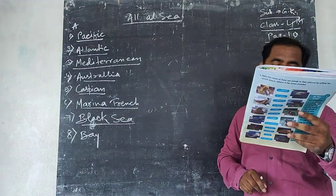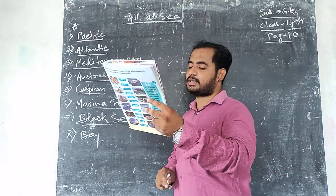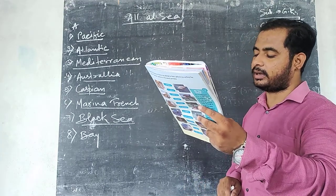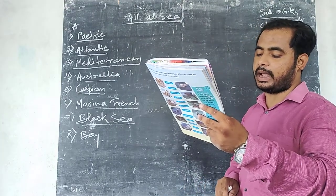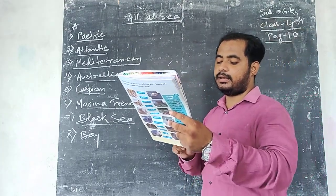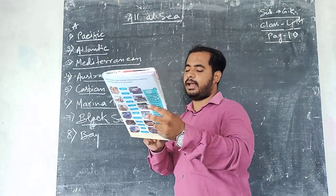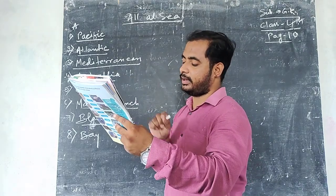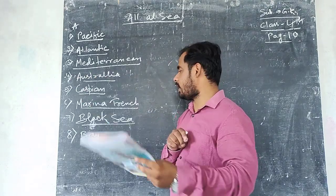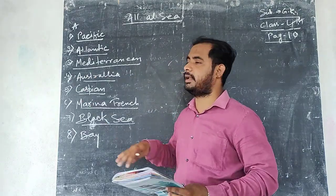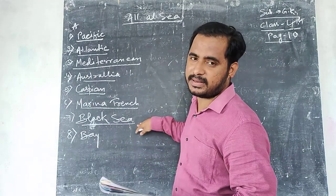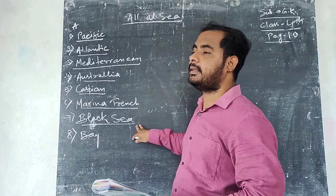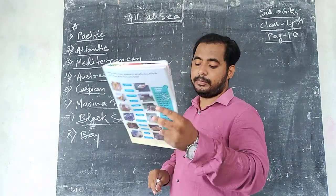Question number 7: This sea is located in Southeast Europe. Its bottom layer contains almost no light, and it is called the Black Sea. The answer to question number 7 is Black Sea.